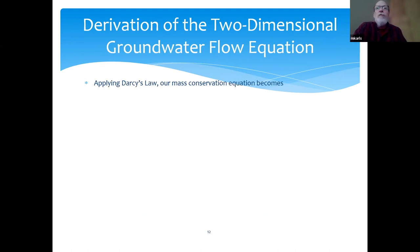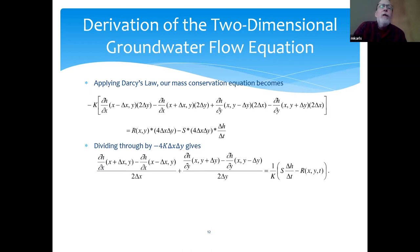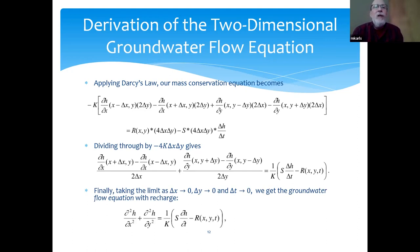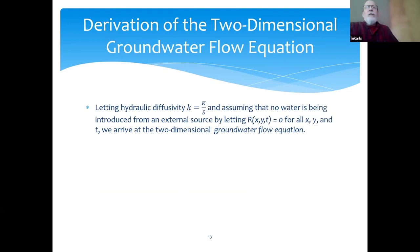So if we apply Darcy's law, our mass conservation equation becomes this. Basically, we've substituted in Darcy's law for each of the volumetric flow rate terms. If you divide through by the quantity minus 4 times K times delta x delta y, you get this expression here. What you can do is you can let the change in x, change in y, and change in t go to 0, and what you get is the groundwater flow equation with recharge. On the left-hand side, you have the sum of the second partial derivatives of the head level with respect to x and y. On the right, you have the derivative of the head level with respect to time plus a recharge term. If we define kappa to be thermal conductivity over the storage coefficient, assume no water is being introduced from an external source, letting the R term equal 0, for x, y, and t, we arrive at the two-dimensional groundwater flow equation right here. Equation 1, that's the two-dimensional heat equation.